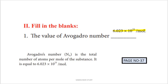Next, fill in the blanks: the value of Avogadro's number. This is a constant value, students — you have to memorize it. From page number 37: Avogadro's number is the total number of atoms per mole of the substance, equal to 6.023 × 10²³. This value is very important in chemistry. You have to memorize it.